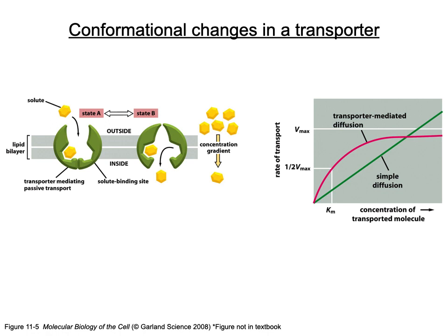Once the substrate unbinds from the transporter inside the cell, that unbinding triggers the transporter to return to state A — open on the outside, closed on the inside, with empty binding sites. Because of the high concentration outside, the solute binds again, inducing conformational change to state B, bringing it inside. Transporters increase the rate of transport versus simple diffusion, though eventually the concentration gradient equalizes and efficiency plateaus.